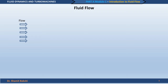Let us look at the slides now. What you can see here — let us see what we actually mean by fluid flow and what are the applications, why do we need to study fluid flow. The arrows pointing towards the right are indicative of a flow. These are like velocity vectors. Velocity is a vector quantity, so it is indicated by both magnitude and direction.